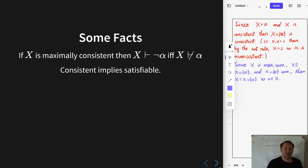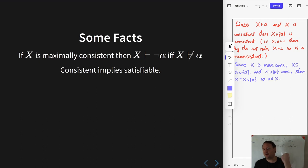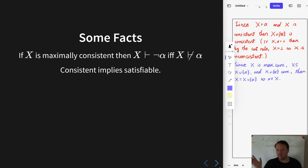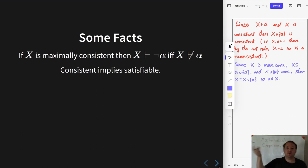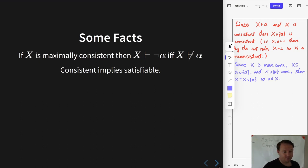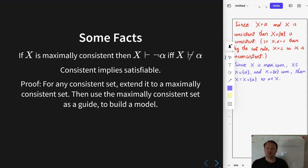Now the book says this slightly differently — it says that every maximally consistent set is satisfiable. I thought it was nice to go ahead and state the slightly stronger version because it is so easy in the proof. Basically, take any consistent set, we know it can be extended to a maximally consistent set, and then from there we just pick up the proof exactly the same way as in the book.